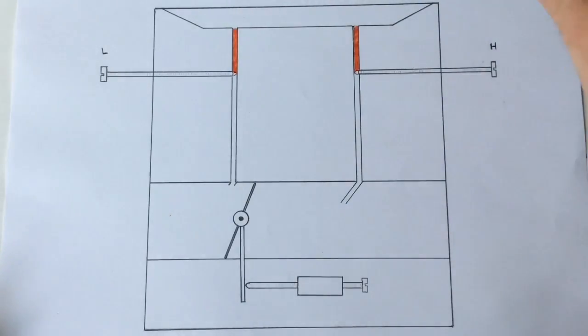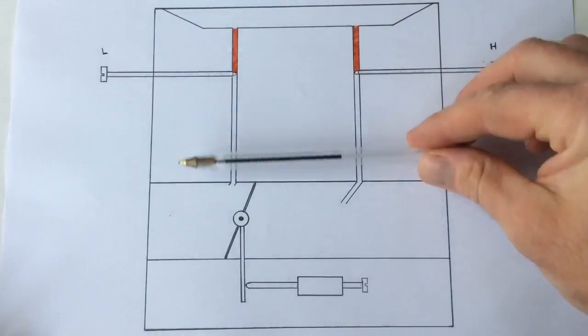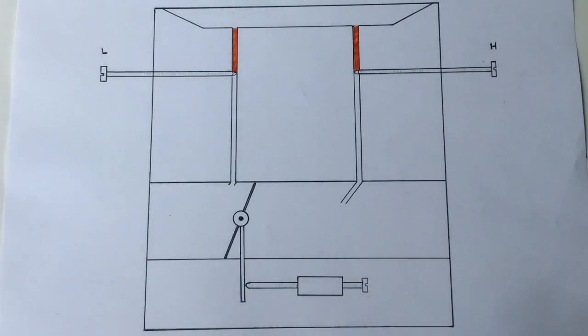So this is like a cross-section diagram of the carburetor, if you like. If you were to cut it in half, it would look something like this, basically.